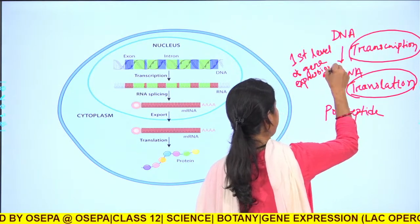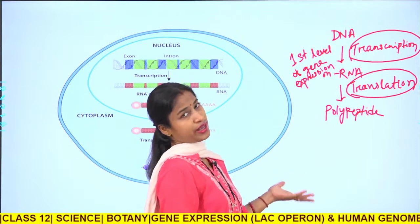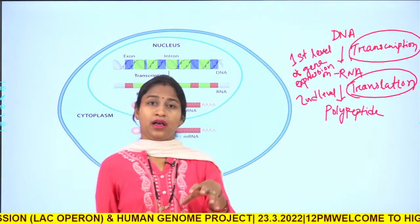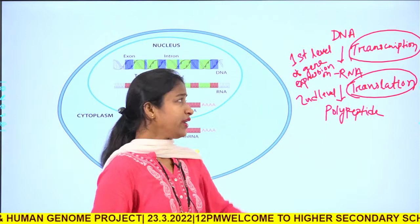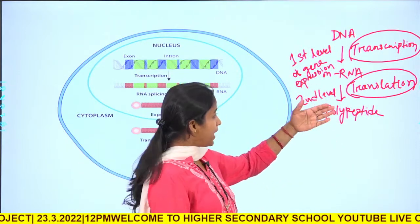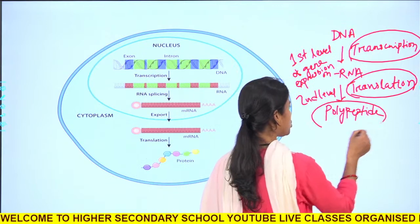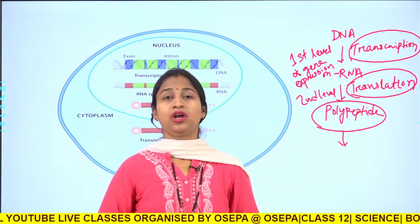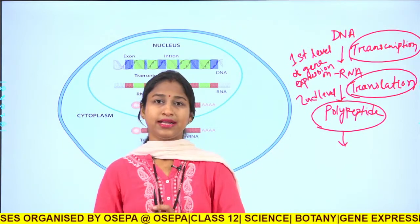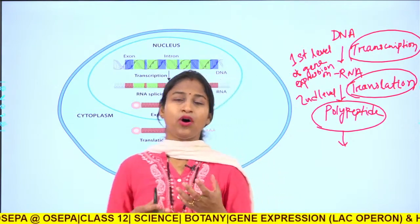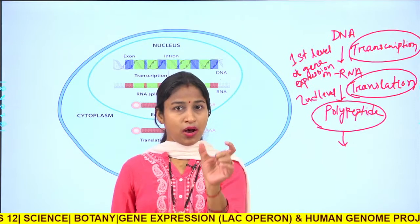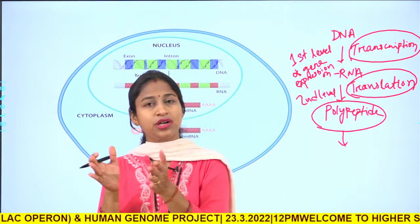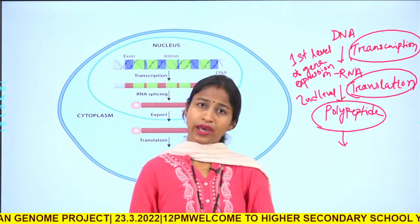Translation is the second level of gene expression, but there are many other steps. In case of prokaryotes it is straightforward, but after the translation process the polypeptide also undergoes certain changes which we call post-translational modification. While we discussed transcription and translation, we also covered post-transcriptional modifications of RNA and post-translational modifications of proteins.